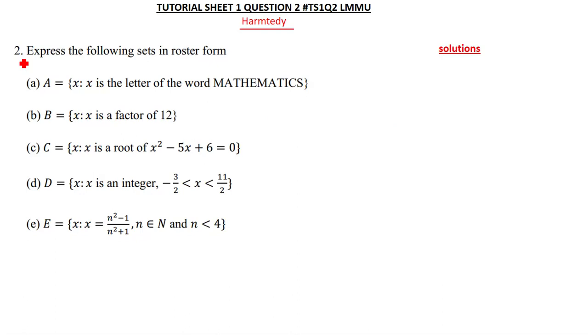The first question, which is question 2, says express the following sets in roster form. I'm sure by now you know what a roster form is. A roster form is simply just a normal set. A is equal to, you put your elements there, you write your numbers there and then you close the brackets. Let's look at this. They are telling us to say A is equal to, x is such that x is a letter of the word MATHEMATICS.